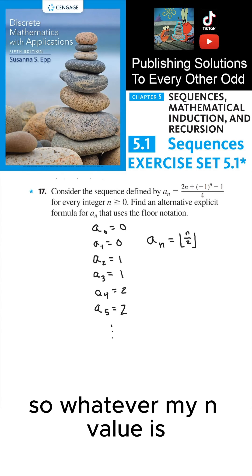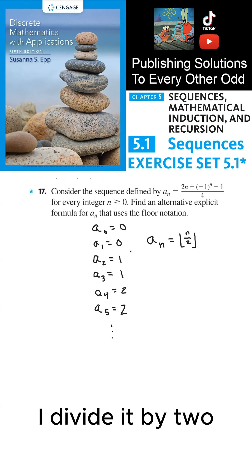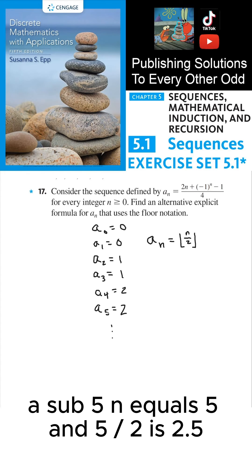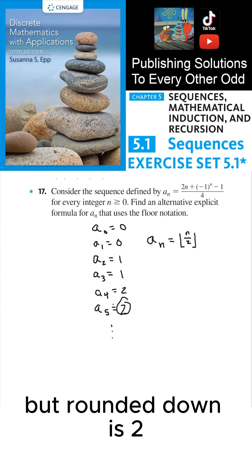So whatever my n value is, I divide it by 2, then take the floor function. For example, a_5 has n equals 5, and 5 divided by 2 is 2.5, but rounded down is 2.